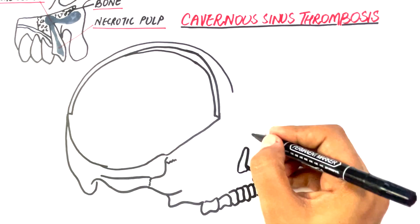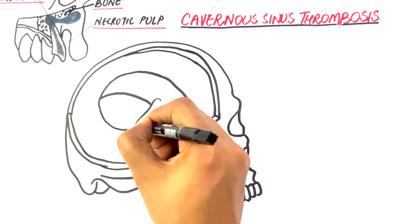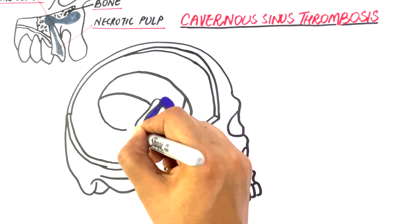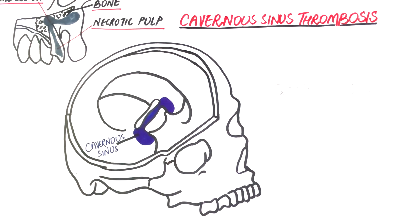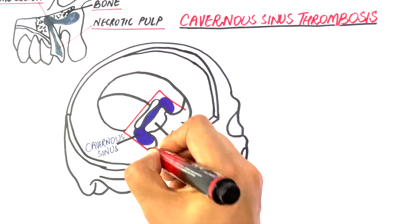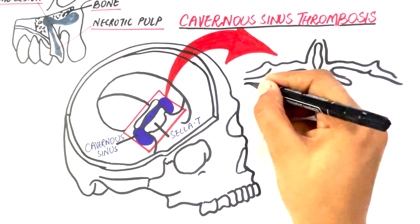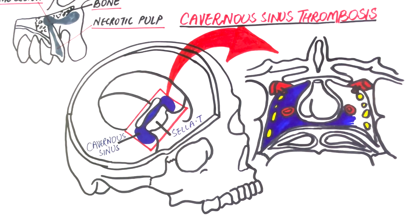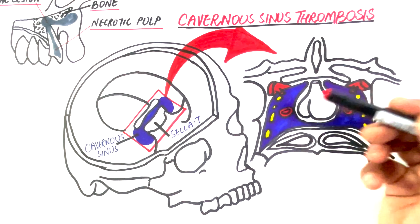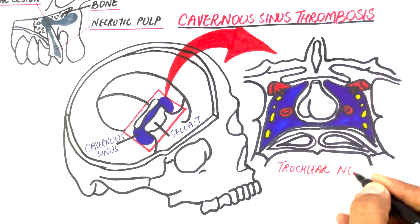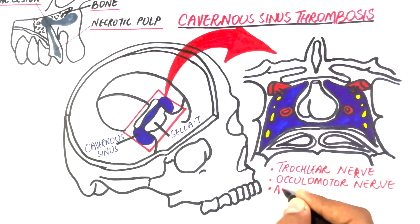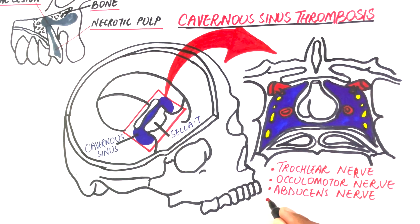The cavernous sinus is a group of thin-walled veins located lateral to the sella turcica of the sphenoid bone. Some really important structures course through the lateral wall of the cavernous sinus on both sides. These are the nerves associated mainly with the orbit, including the trochlear, the oculomotor and the abducens nerve, and also the ophthalmic and maxillary divisions of the trigeminal nerve.